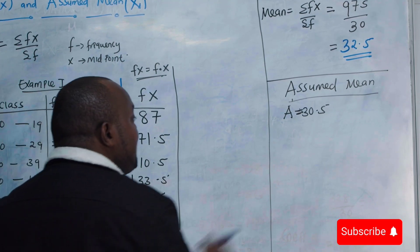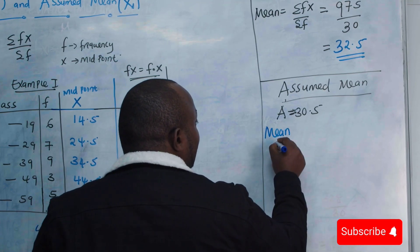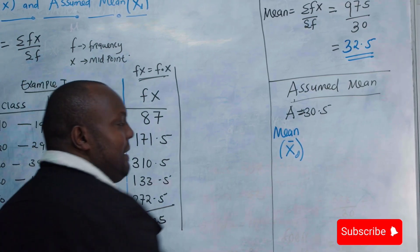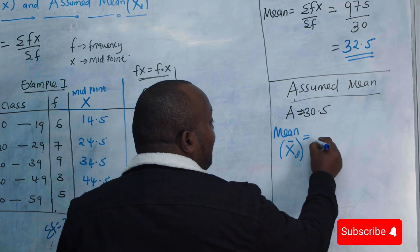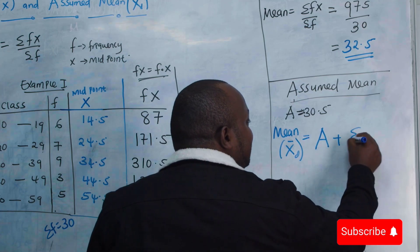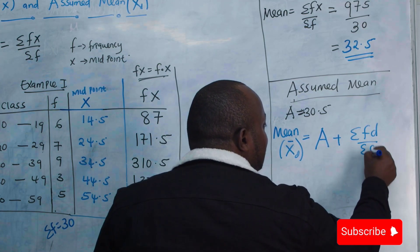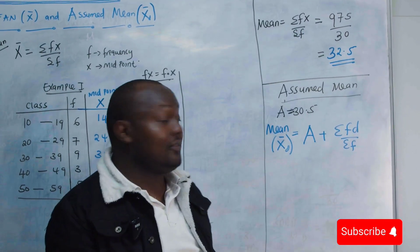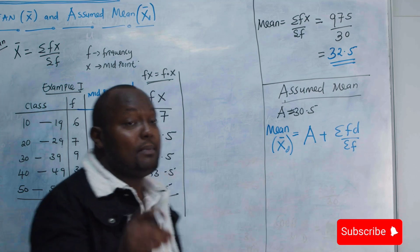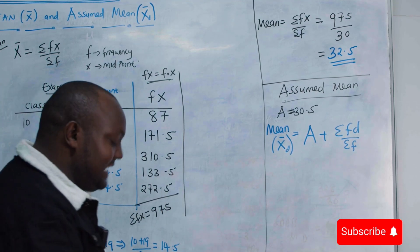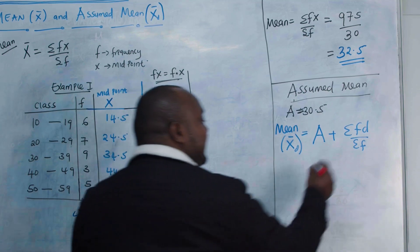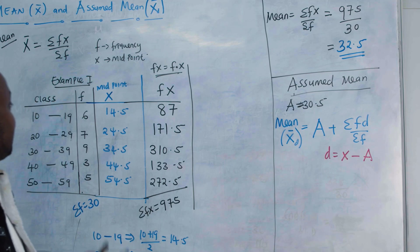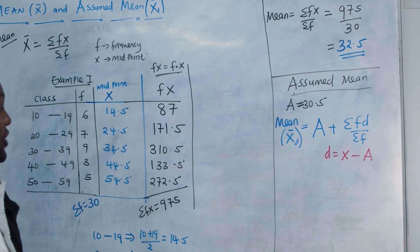The formula for the assumed mean method is: mean equals the assumed mean A plus the summation of fd over the summation of f. Instead of using summation of fx, this time we use summation of fd, where d is the difference between x, the midpoint, and the assumed mean A.